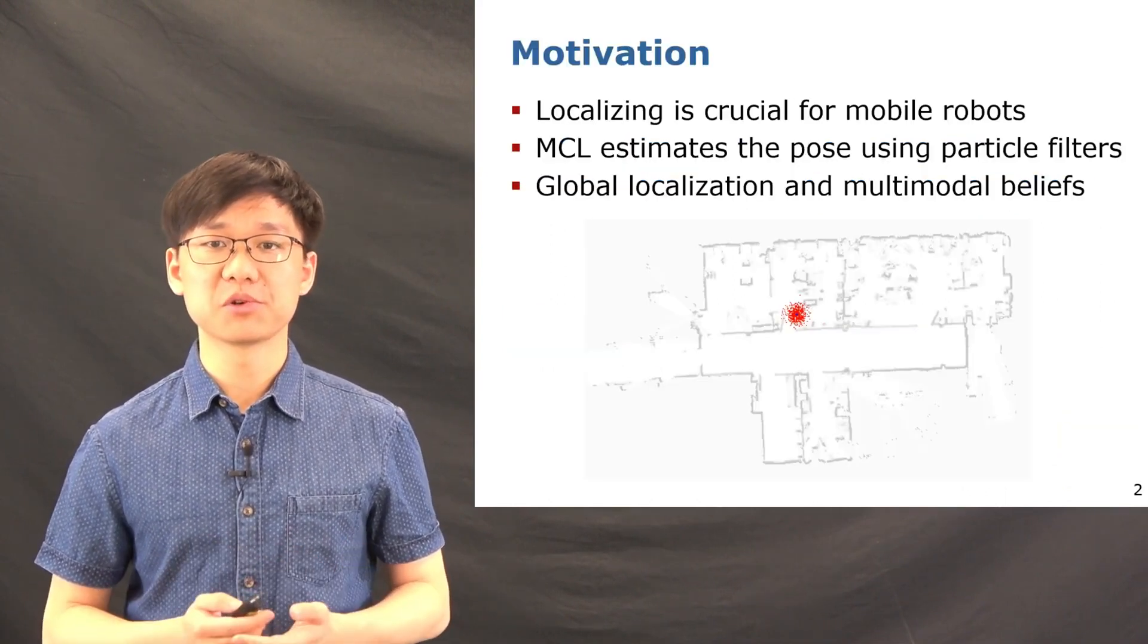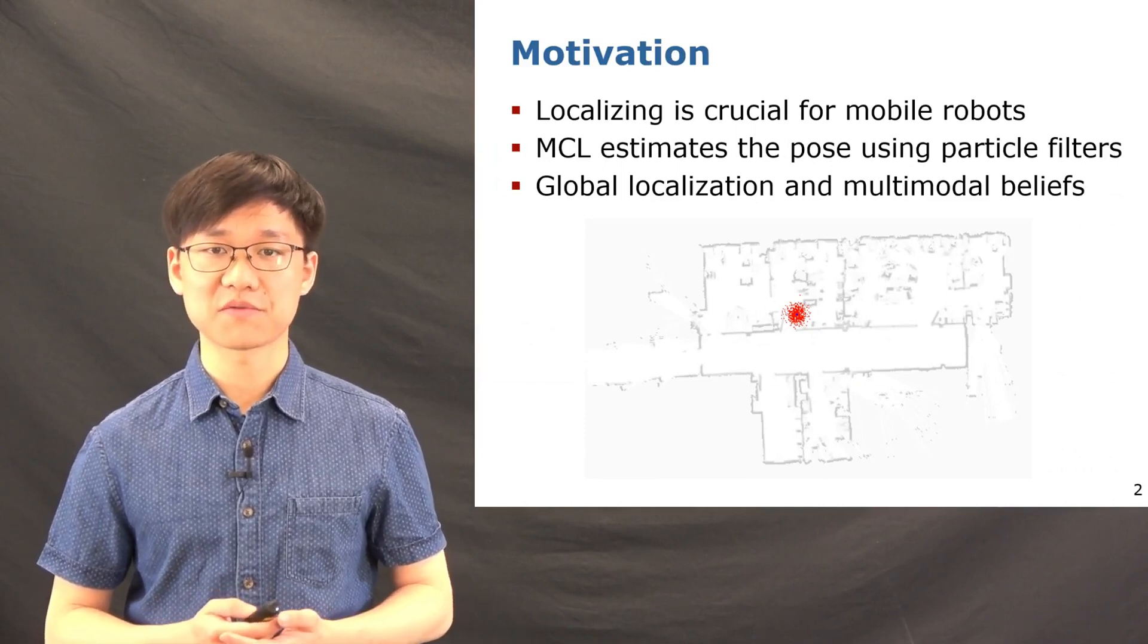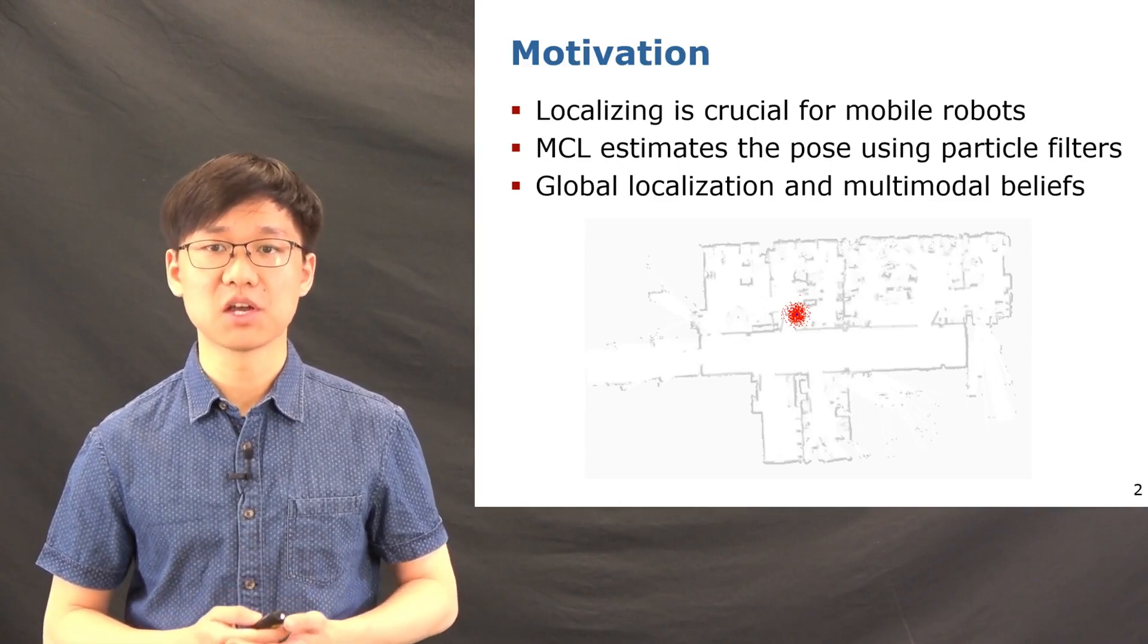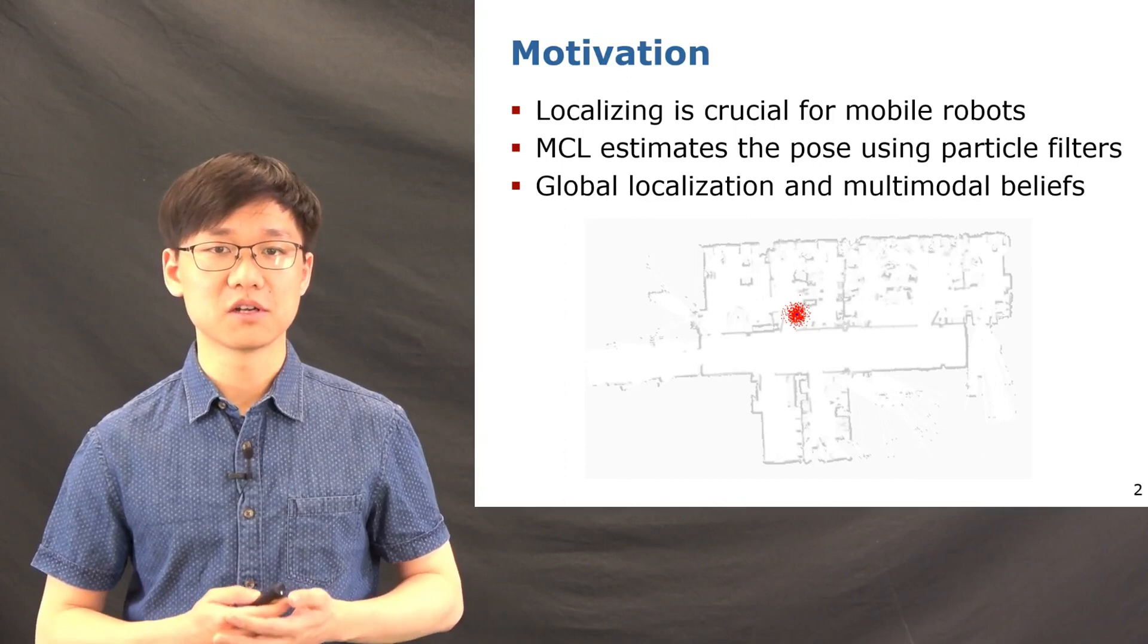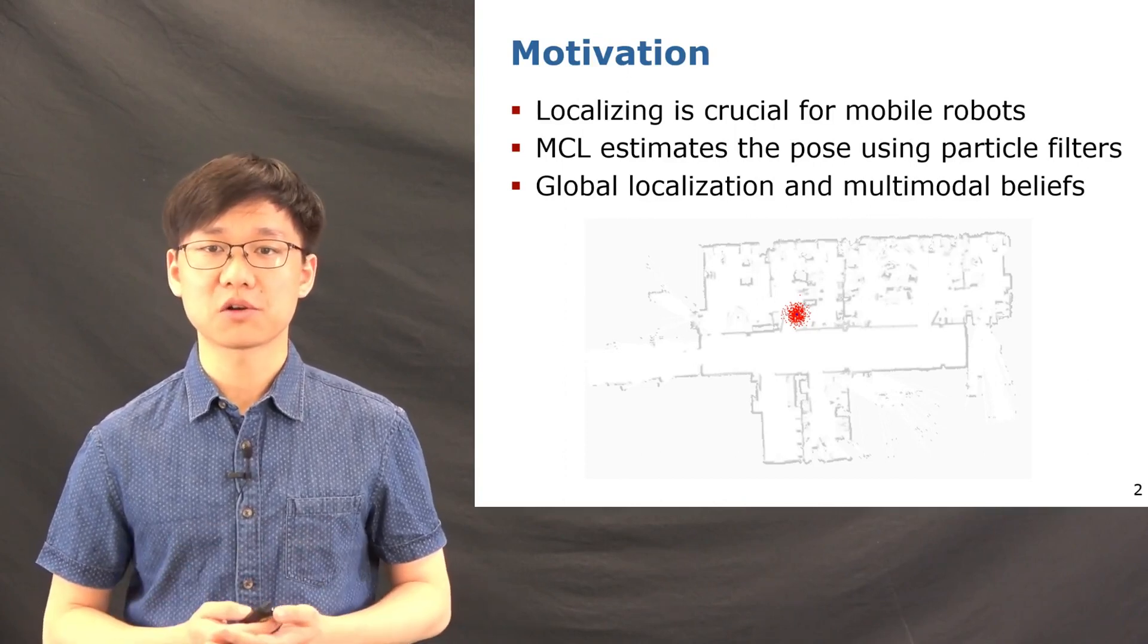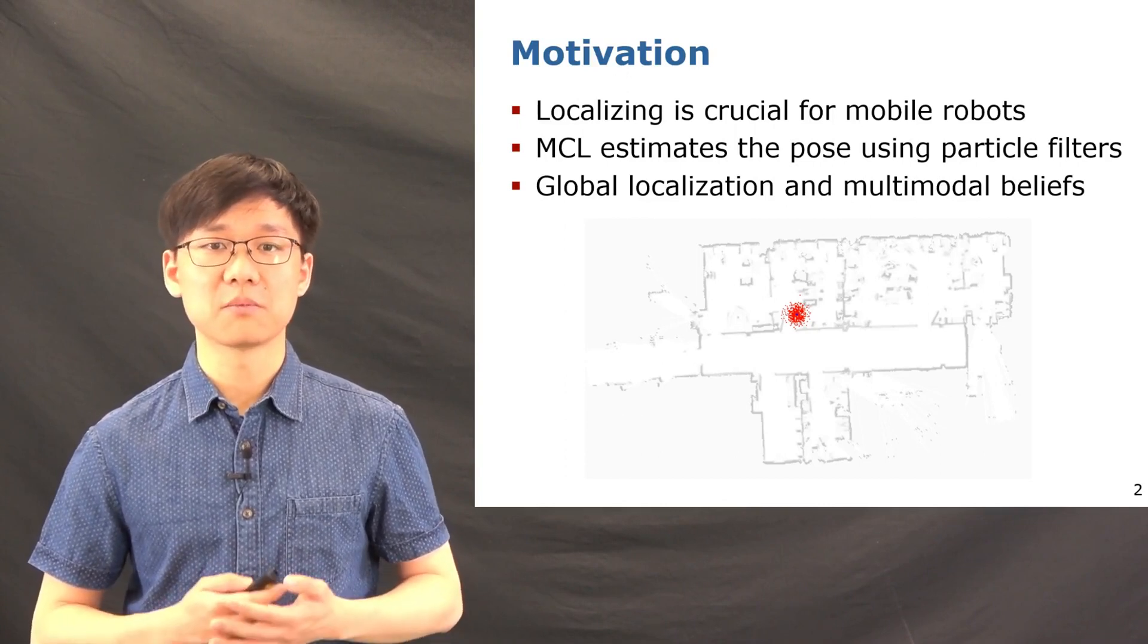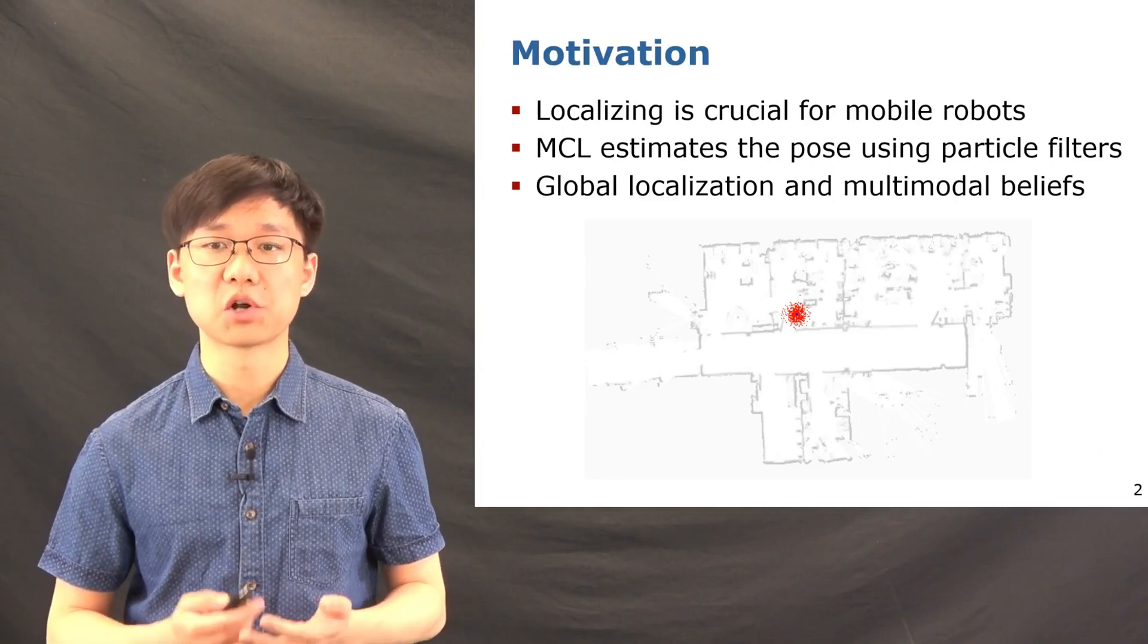Localizing in a pre-built map is very important for mobile robots and autonomous driving cars. The Monte Carlo localization has been successfully used with particle filters for global localization with multimodal beliefs. Therefore, in this work, we use Monte Carlo localization with particle filters to estimate the pose of a mobile robot or an autonomous driving car to achieve global localization.